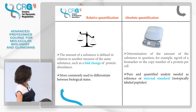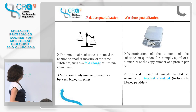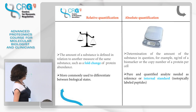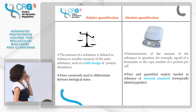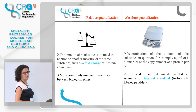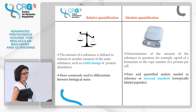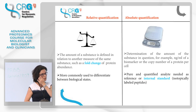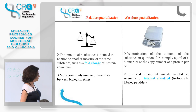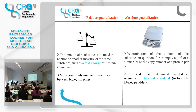We use relative quantification commonly to differentiate between biological states, and most quantitative data is relative. But in some cases we need absolute quantification — for example, to determine copy numbers per cell of a particular protein. For absolute quantitation, we need standard peptide standards that are usually isotopically labeled and very accurately quantified.